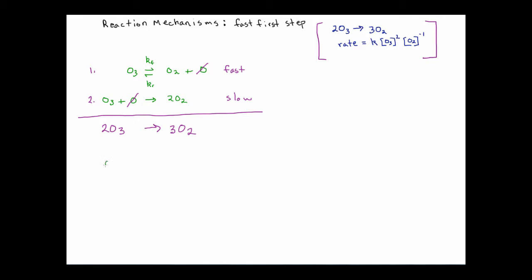Now the second criteria — I'm going to rewrite my equation here quickly. The second criteria is that we need to be able to generate a rate law from the elementary steps that matches the experimental rate law. In this type of set of steps, we have an issue because you can see the first elementary step is not the rate limiting step — it's a fast step. And then the second step is the rate limiting step.